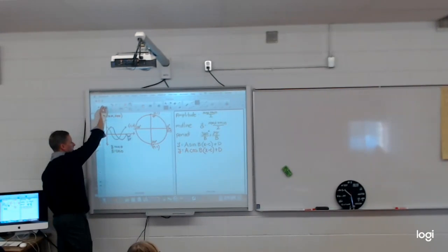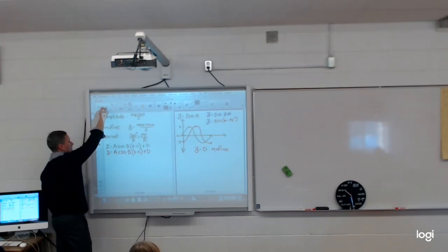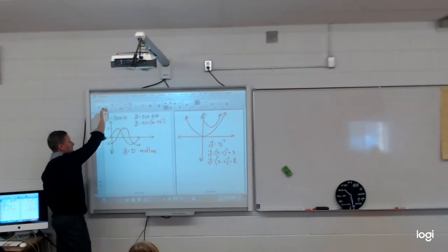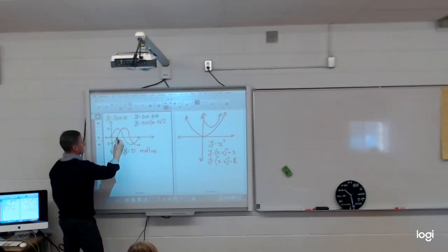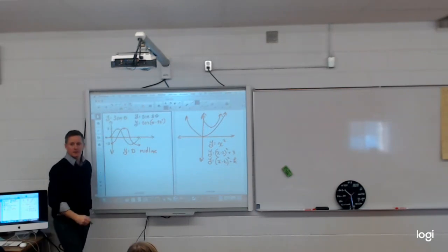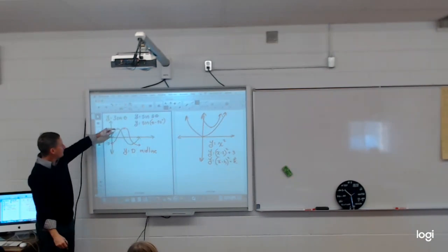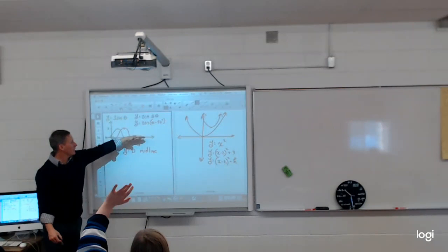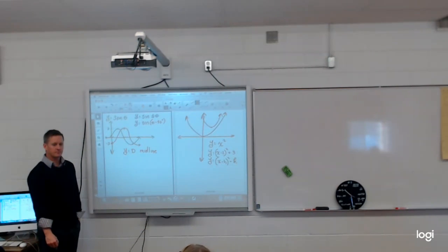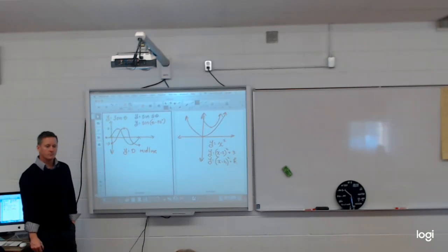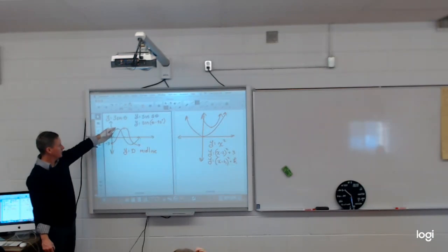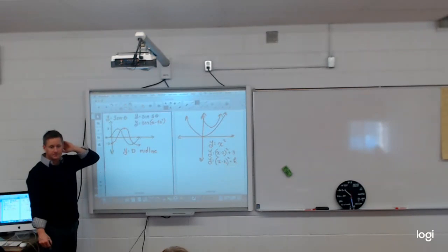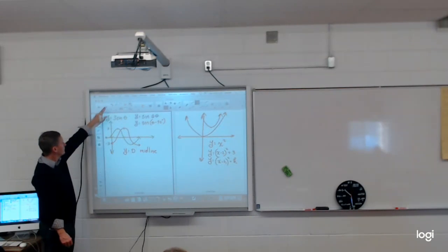The midline is halfway between your peak and your valley — it's the halfway point. So in order to find the midline, you get the amplitude then the value. You take the maximum, add the minimum, and divide by 2.